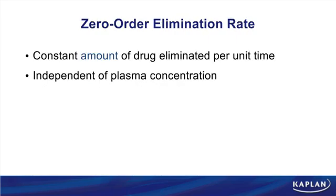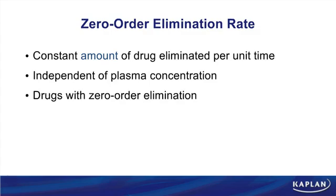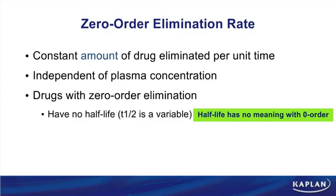There are two types of elimination: zero order and first order. Zero order is the exception to the rule — very few drugs are actually eliminated by zero-order kinetics. Make sure you highlight that it's a constant amount of drug that's being eliminated per unit time. Also notice that drugs with zero-order elimination have no consistent half-life. Half-life has no meaning with zero order because it's not constant; the half-life is actually changing with zero-order elimination.